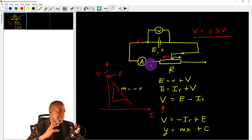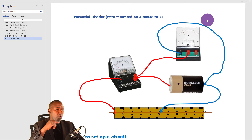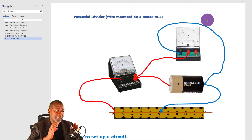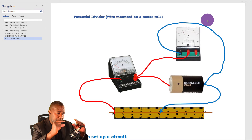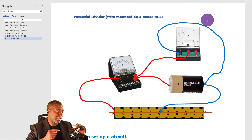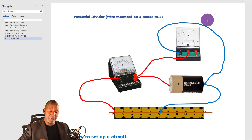Now, one of the things I'd like you to observe is that the circuit I've just shown you — you will be expected to connect it in this way. Number one: arrange the apparatus on the table the way they appear in the circuit. Start with the dry cell or battery, put the battery over there, then next to it put the voltmeter on the upper side, on the left-hand side have the ammeter, and then have the meter rule — the meter rule with the wire mounted on it — very close to you.